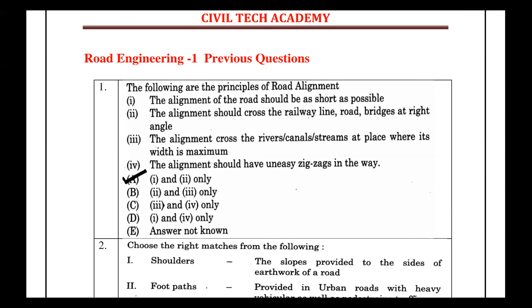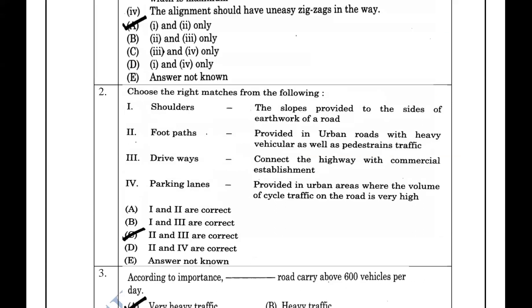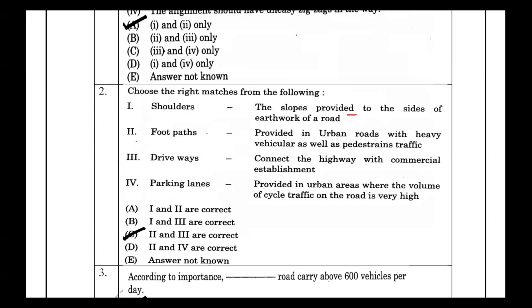Next question asks us to correctly match the road components. The first one is the shoulder — the slope provided to the side of the earthwork road is called the side slope. The shoulder is provided for emergency purposes.